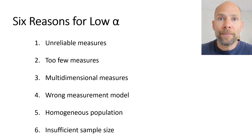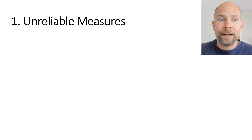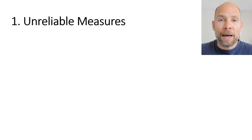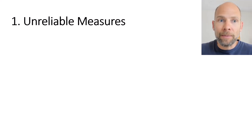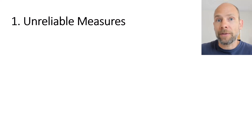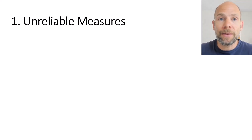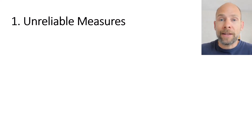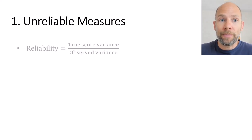Number one is perhaps the most intuitive reason: when your measures are unreliable. Cronbach's alpha is a measure of composite reliability, and therefore when measures contain a lot of measurement error, that may result in a low Cronbach's alpha.